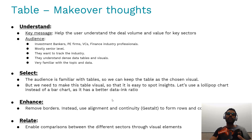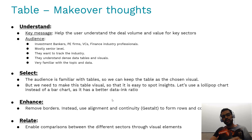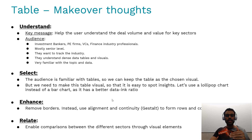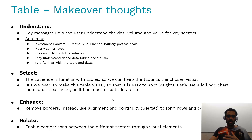For the Select step, since the audience is familiar with tables we can keep the table as the visual, but we need to add visual elements so insights come out more clearly — people shouldn't need to read and compare text one by one. A typical way to add visual elements to a table is with data bars, but we can also use a lollipop chart instead of a data bar to convey the same message with less ink, making it less visually overwhelming. In the Enhance step we remove borders and use good alignment, common baselines, and continuity to form rows and columns. For the Relate step we enable comparisons between sectors through those lollipop chart visual elements.